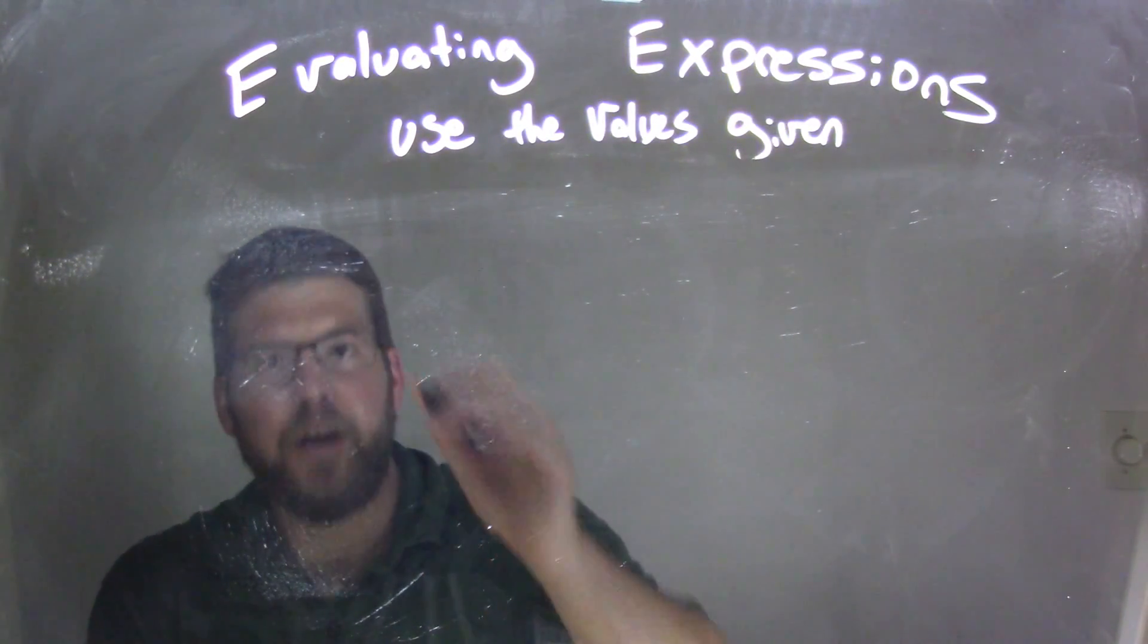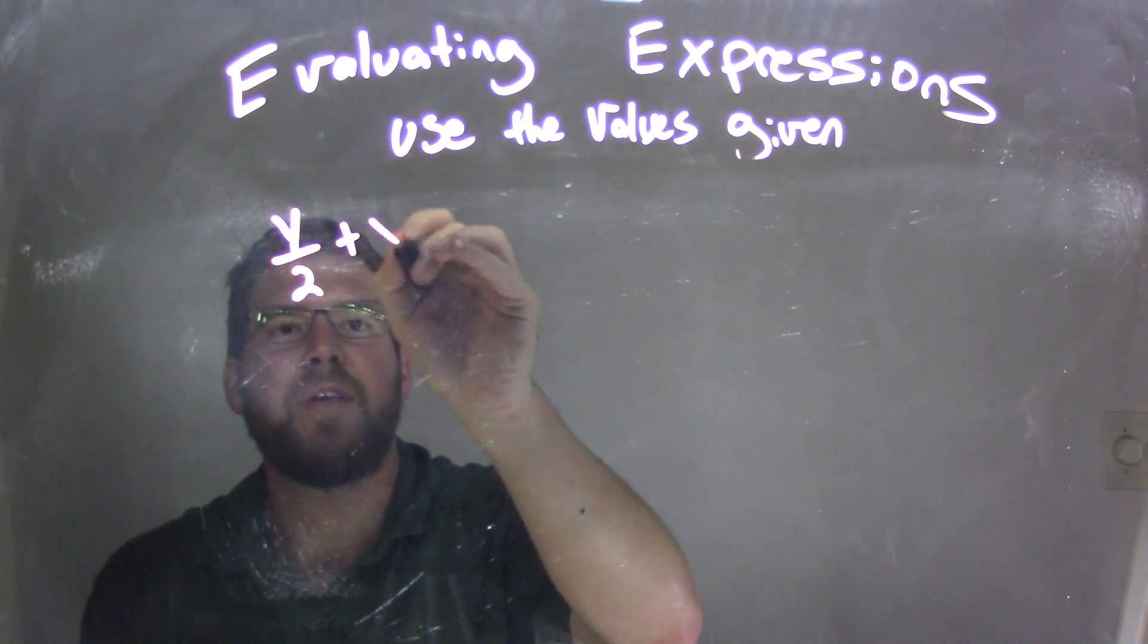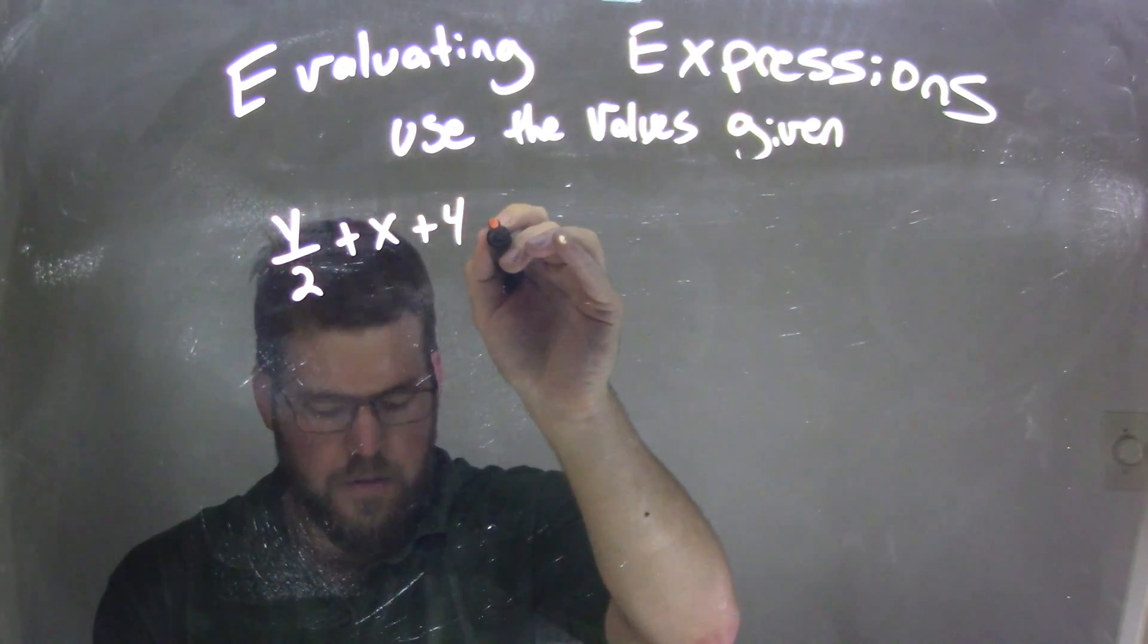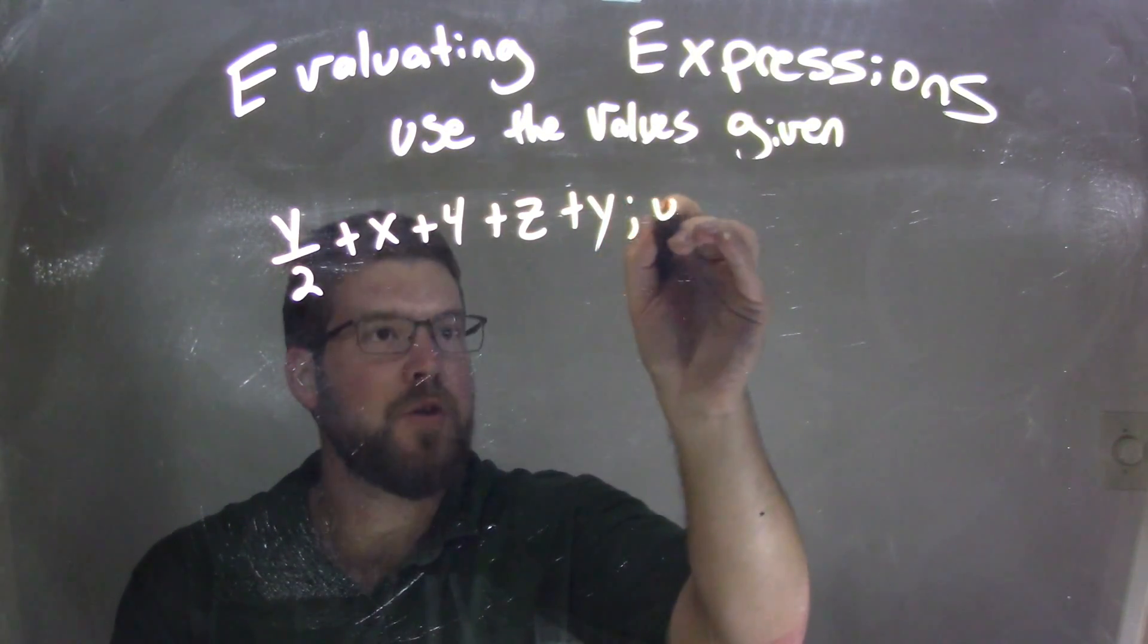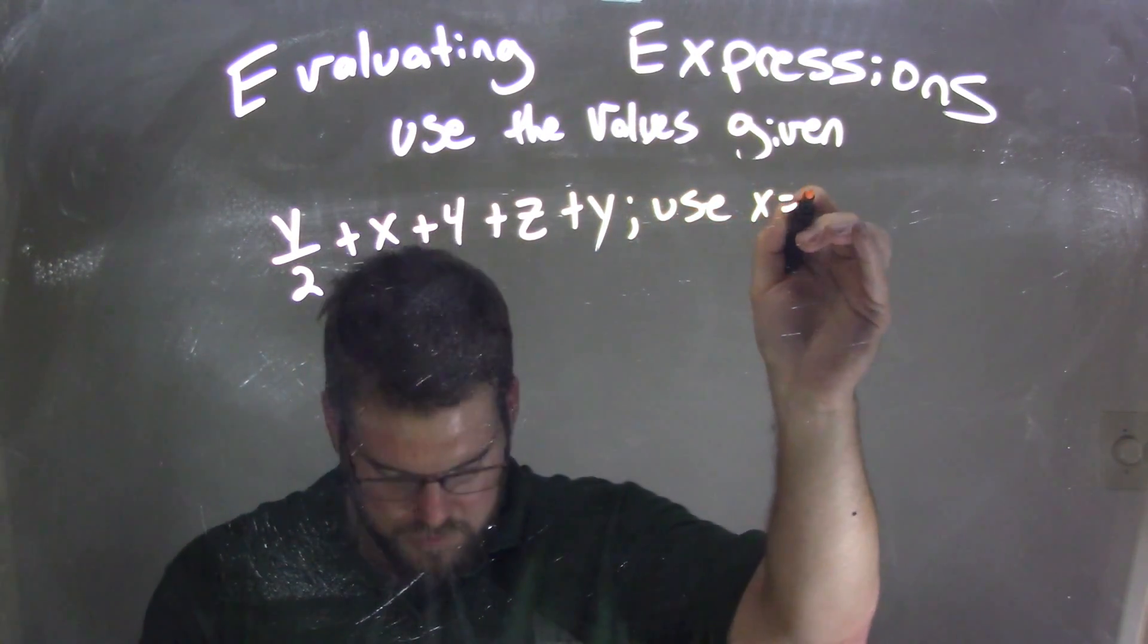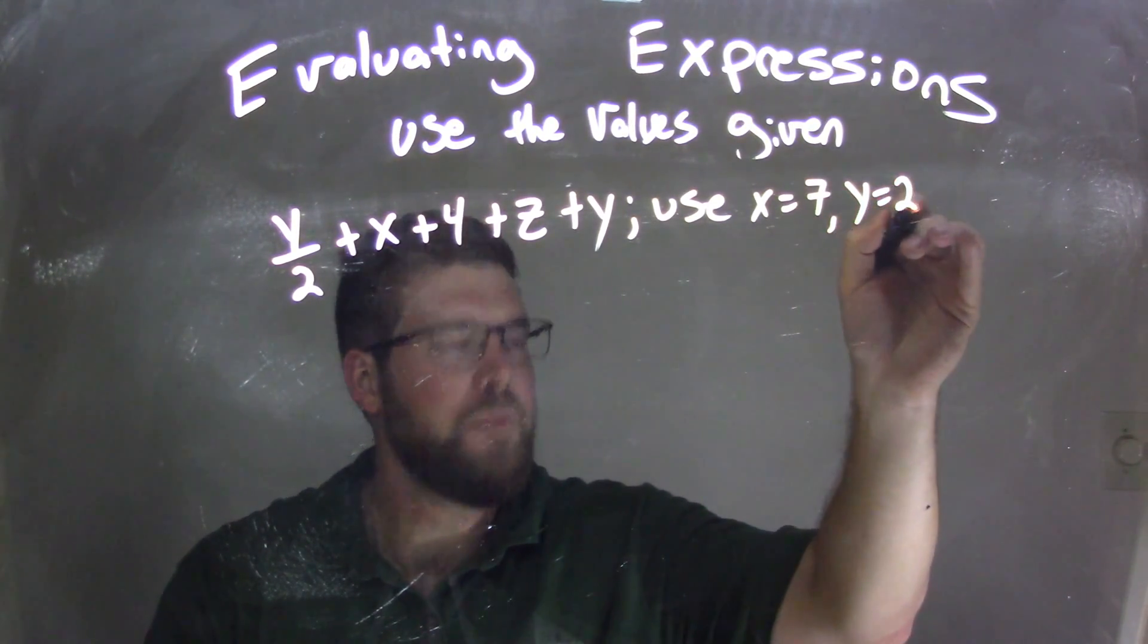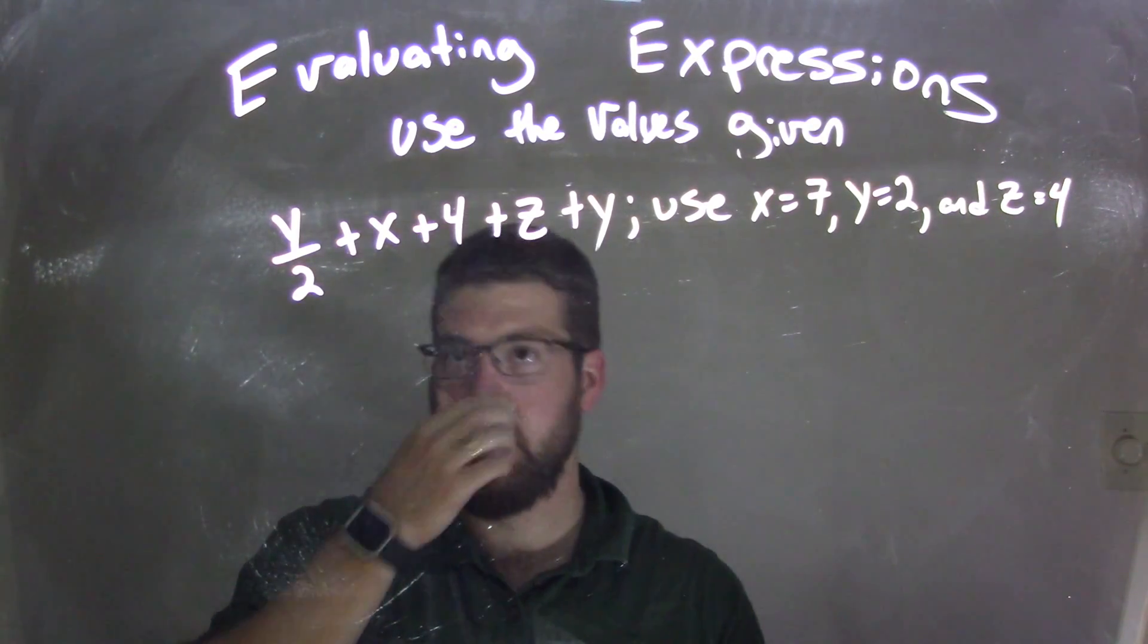So if I was given this expression: y over 2 plus x plus 4 plus z plus y, and we're going to use x equals 7, y equals 2, and z equals 4.